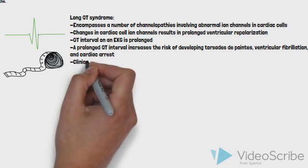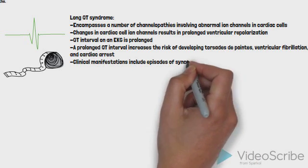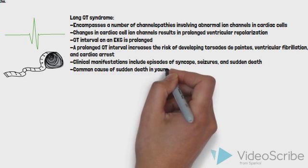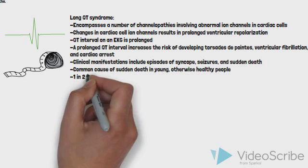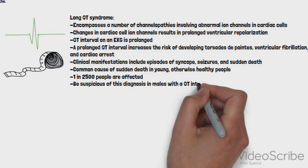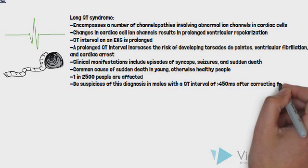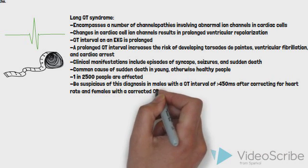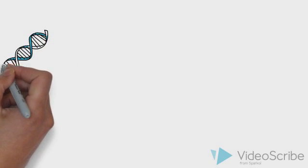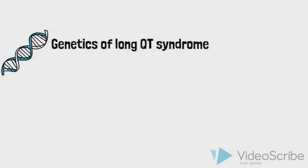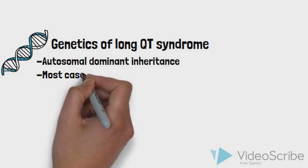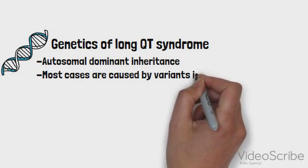Long QT syndrome often initially manifests as episodes of syncope, seizures, or sudden death, and is a common cause of sudden death in young, otherwise healthy people. As many as 1 in 2500 people are affected. This diagnosis should be suspected in males with a QT interval over 450 ms after correcting for heart rate, and in females with a corrected QT interval over 470 ms. Most cases of long QT syndrome are related to an underlying genetic abnormality inherited in an autosomal dominant fashion. As many as 15 genes have been implicated, but over 90% of cases have been linked to three genes referred to as LQT1, LQT2, and LQT3.